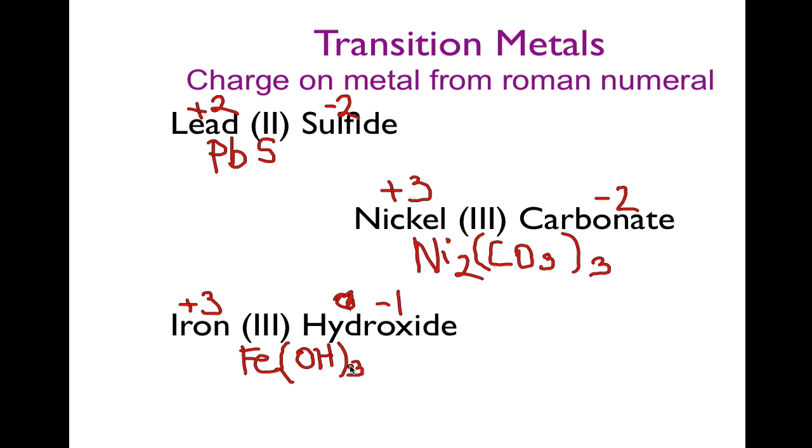So you can see I basically did the same thing for all three of those instances. I wrote down the charge, I wrote down the symbols, and I crossed over the numbers for the crossover rule. Same thing over and over again. Of course, there's three different instances, and they're a little bit different, and you have to be able to recognize those differences in the names.